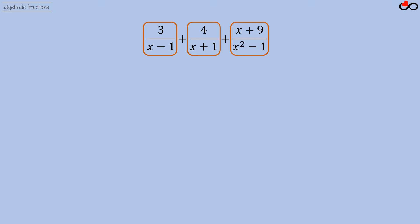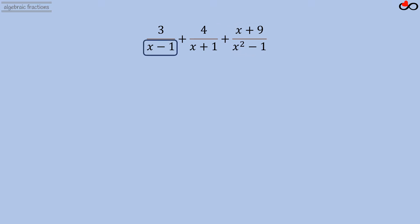In order to simplify this expression, we'll need a common denominator. The denominator of the first fraction, x minus 1, is a monic polynomial of degree 1 — it's irreducible. The denominator of the second fraction, x plus 1, is also a monic polynomial of degree 1 — it's irreducible.